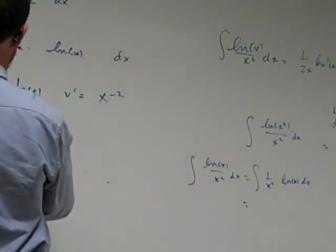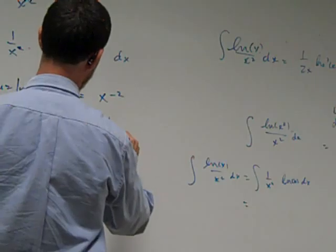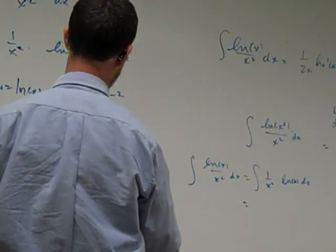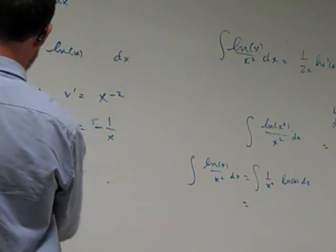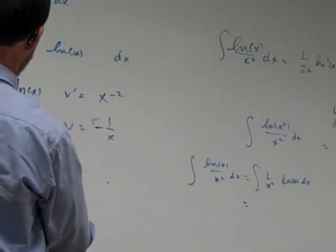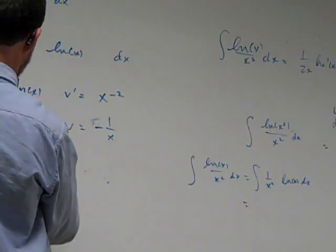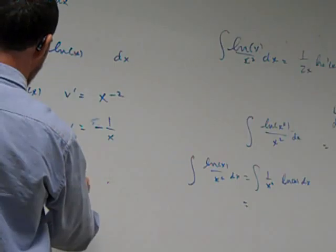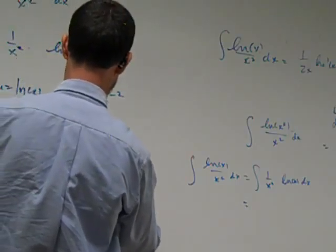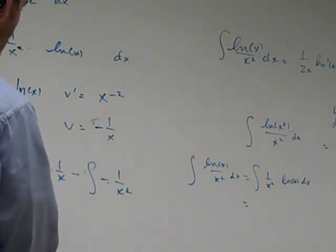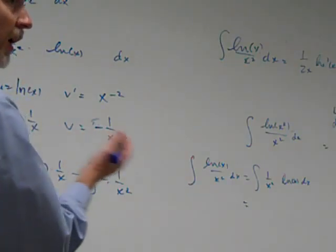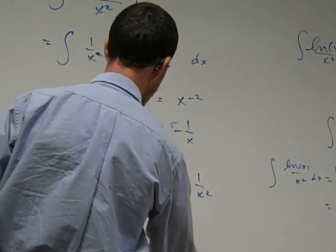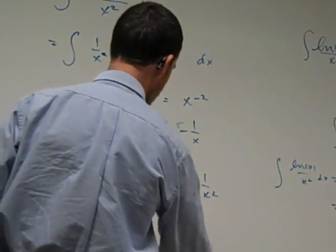We can try it. So then it would be ln of x, it would be equal to ln of x times negative one over x minus the integral of negative one over x squared. Oh yeah, that one we can integrate. Yeah, you got it, Joseph. Very nice. ln of x minus or plus the integral of one over x squared. Which you can finish.